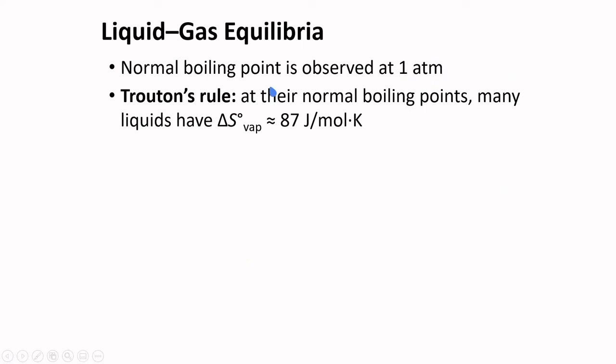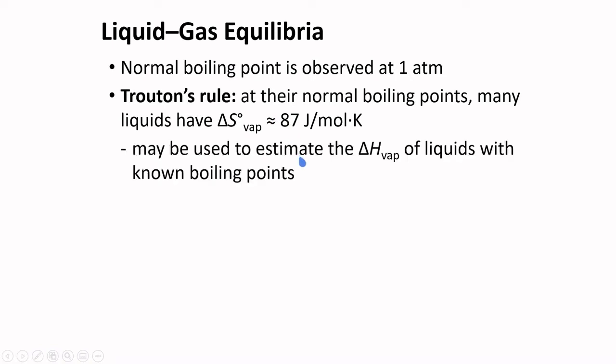Normal boiling point is observed at one atmosphere. We also have Trouton's rule, which states that at their normal boiling points, many liquids have an entropy of vaporization approximately equal to 87 joules per mole per kelvin. This may be used to estimate the heat of vaporization of liquids with known boiling points.